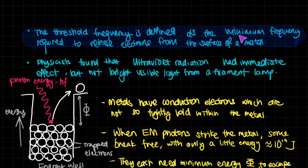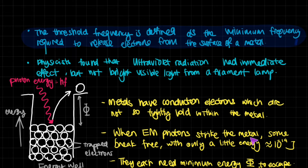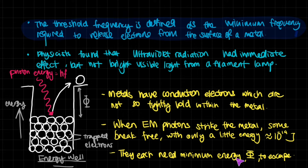The threshold frequency is defined as the minimum frequency required to release electrons from the surface of a metal. Physicists found that ultraviolet radiation had an immediate effect even when weak, but not bright visible light from a filament lamp. Metals have conduction electrons which are not tightly held within the metal — these are the electrons that are emitted. They're loosely held, so they need to do less work to escape when electromagnetic photons strike the metal.